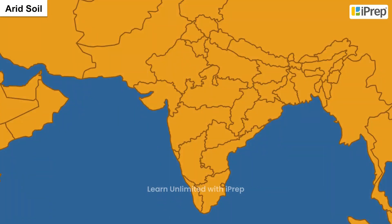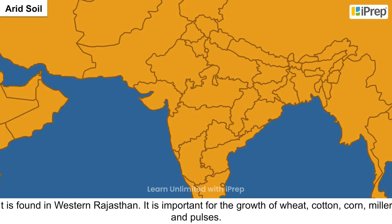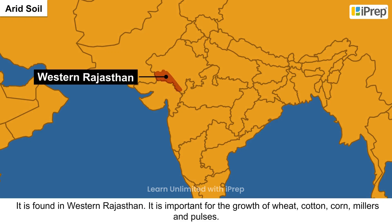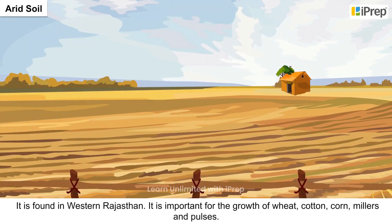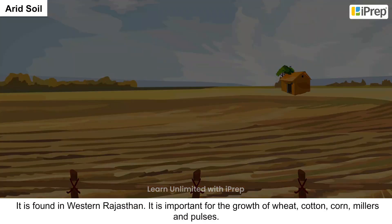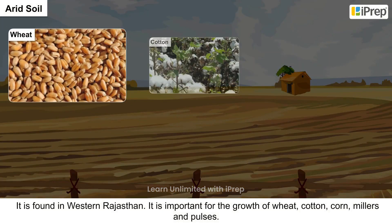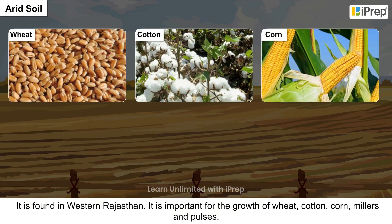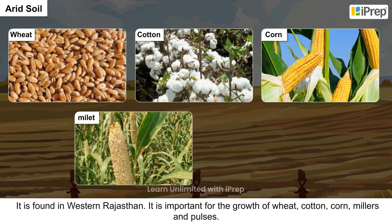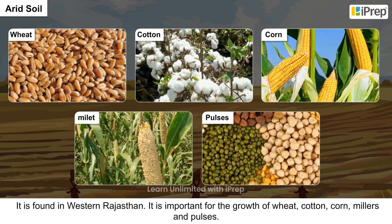Arid soil is found in western Rajasthan. It is important for the growth of wheat, cotton, corn, millet, and pulses.